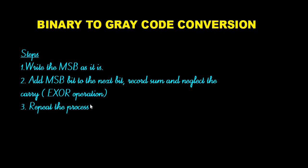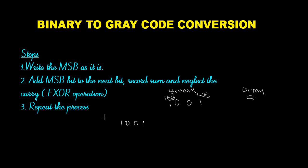We can explain these three steps by considering an example. I am considering a binary digit: 1 0 0 1. This is my binary digit, and I will convert this to grey code. This is my MSB and this is my LSB. I am rewriting my digit 1 0 0 1, taking this as B3, B2, B1, and B0, where B3 is my MSB bit.